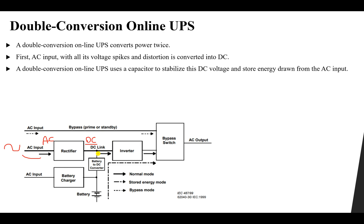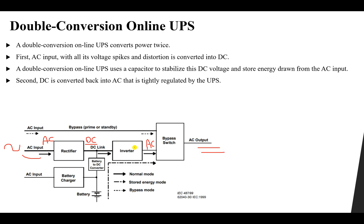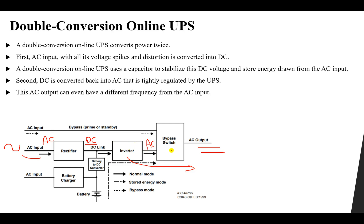The DC link stores energy drawn from the AC input. This DC is then converted back to AC suitable for our load using an inverter. This AC can have the same frequency as the supply or a different frequency, as we would like — by controlling the inverter we can control the output frequency. This is the double conversion process: first conversion, then second conversion.